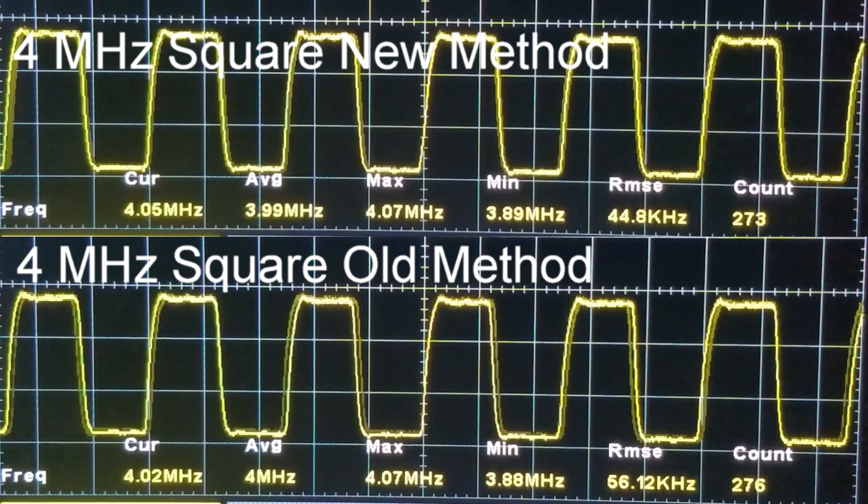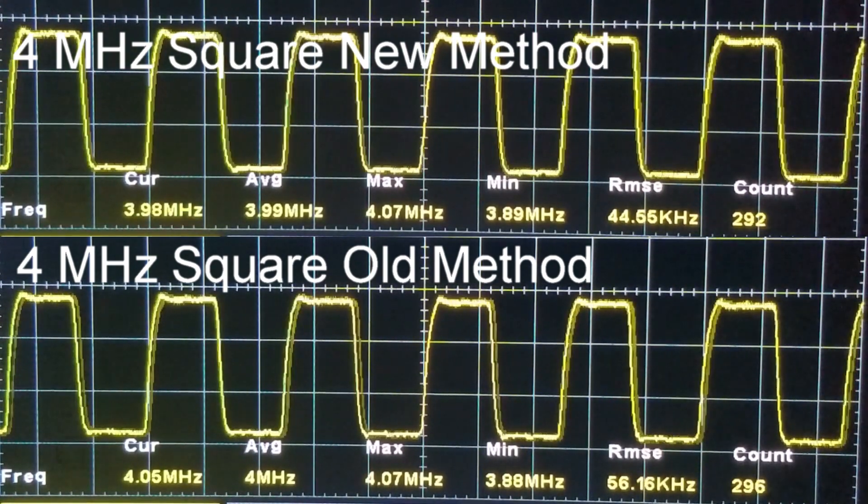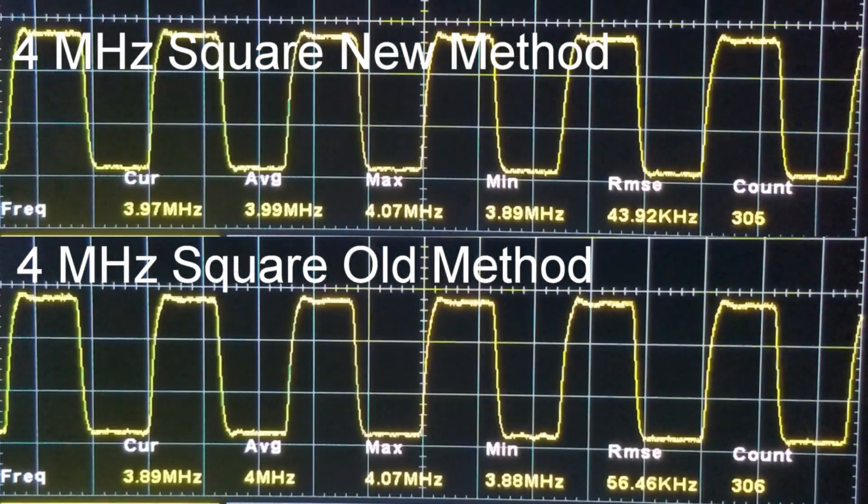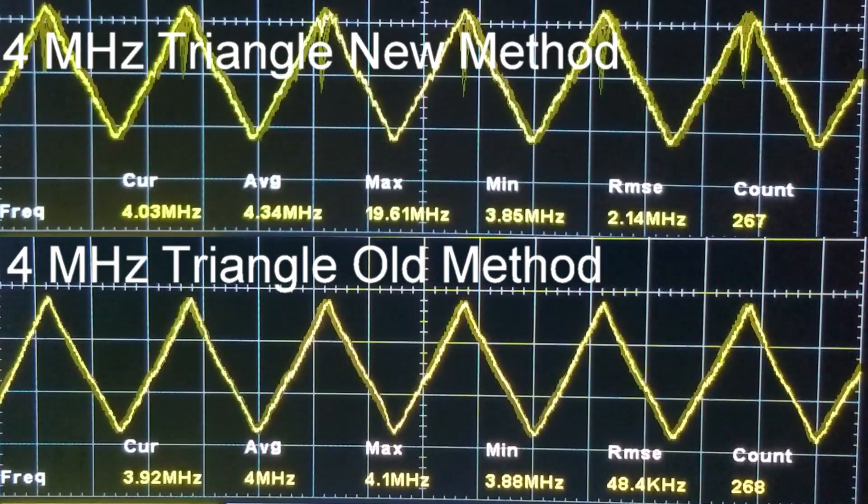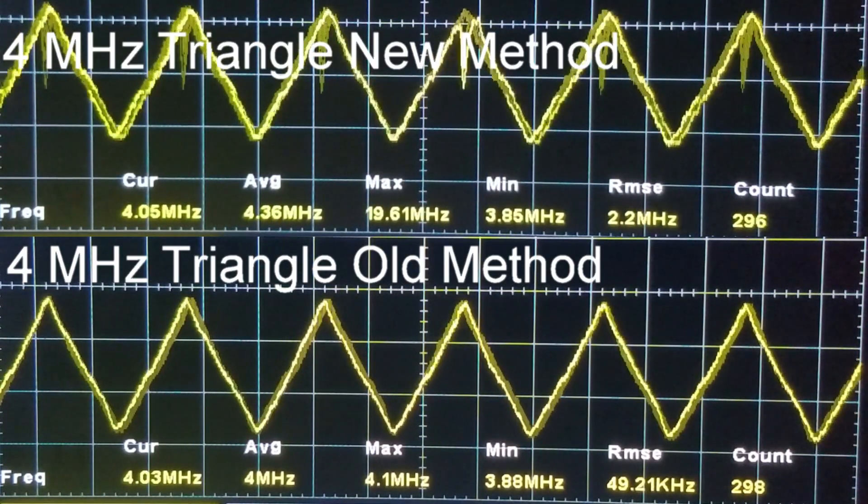The square wave jitter at 4 megahertz is about the same between the old and new method. When we try it on the triangle wave, the new method is a hot mess, since the top of the waveform is significantly distorted.